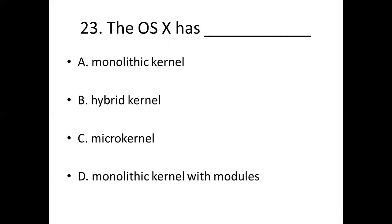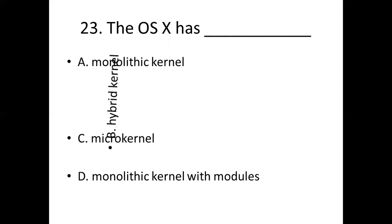Twenty-third bit: The OSX has dash. Option A: Monolithic kernel. Option B: Hybrid kernel. Option C: Micro kernel. Option D: Monolithic kernel with modules. Answer: Option B, Hybrid kernel.